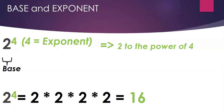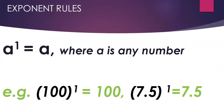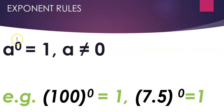Now let's look at some of the rules associated with exponents. The very first rule is: when you have a number and you raise it to the power 1, any number raised to the power 1 is nothing but the number itself. So 100 raised to the power 1 is 100, and 7.5 raised to the power 1 is again the number itself.